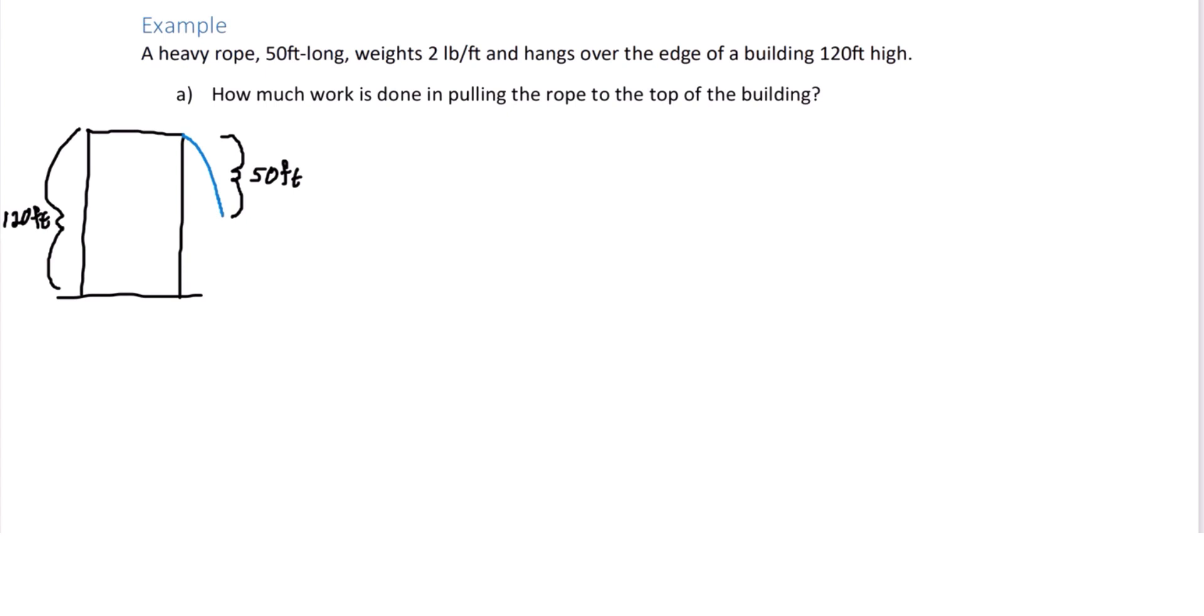A heavy rope 50 feet long weighs two pounds per foot and hangs over the edge of a building 120 feet high. How much work is done in pulling the rope to the top of the building?